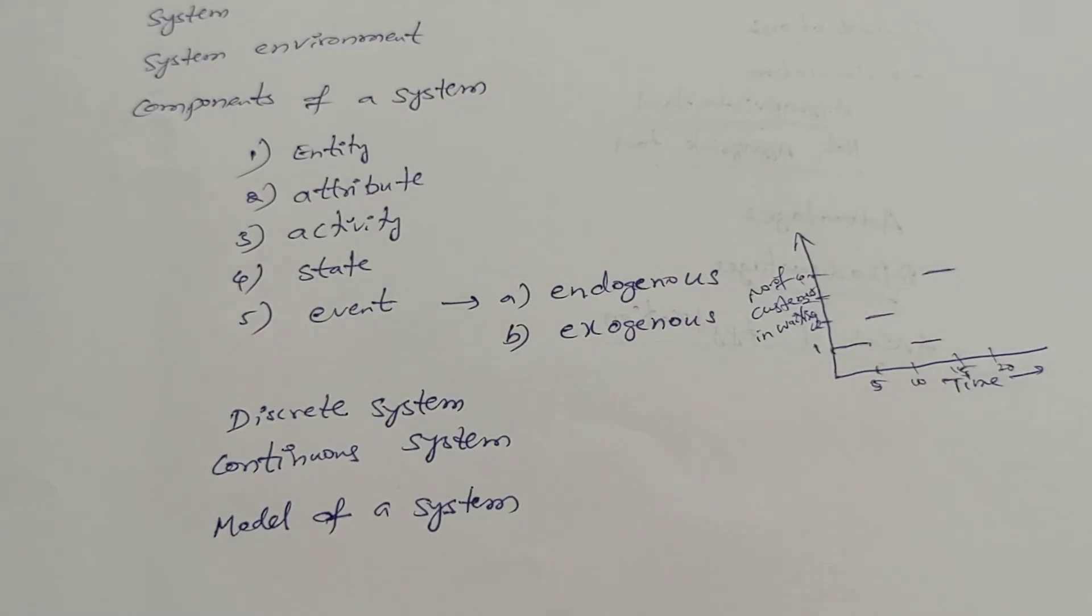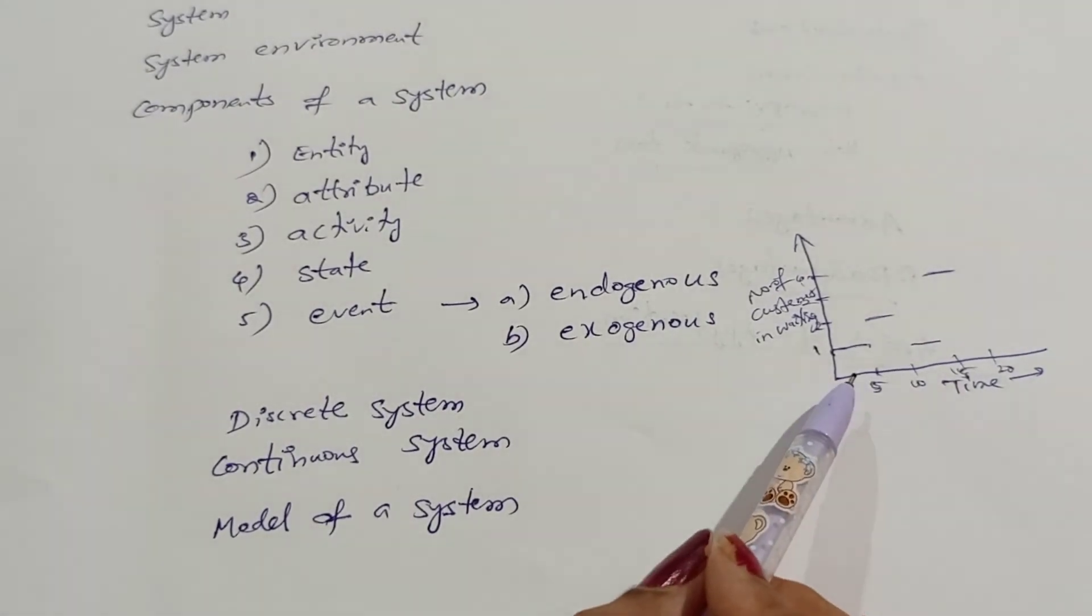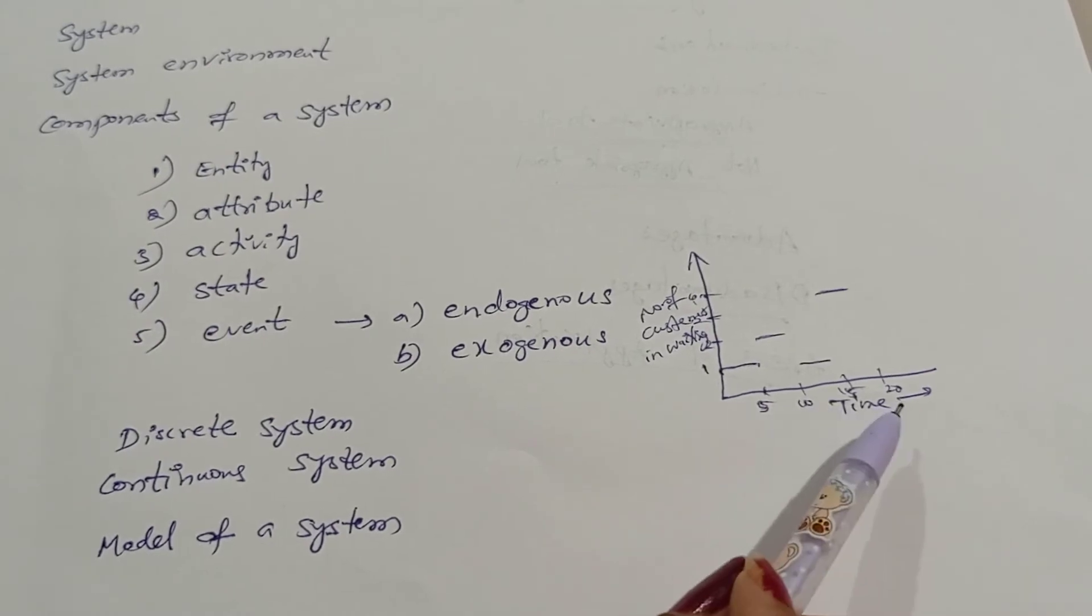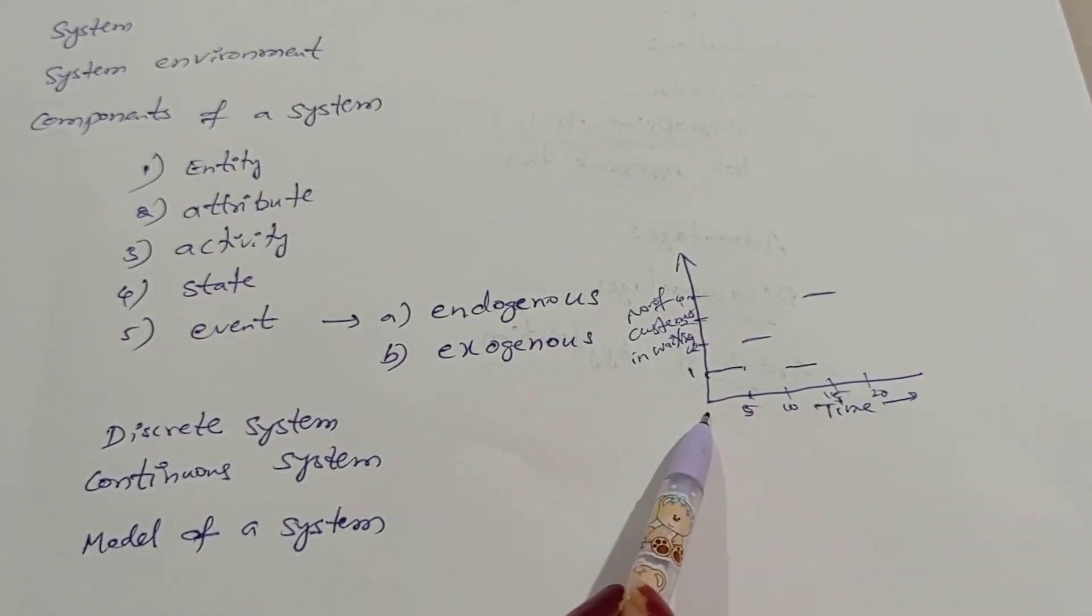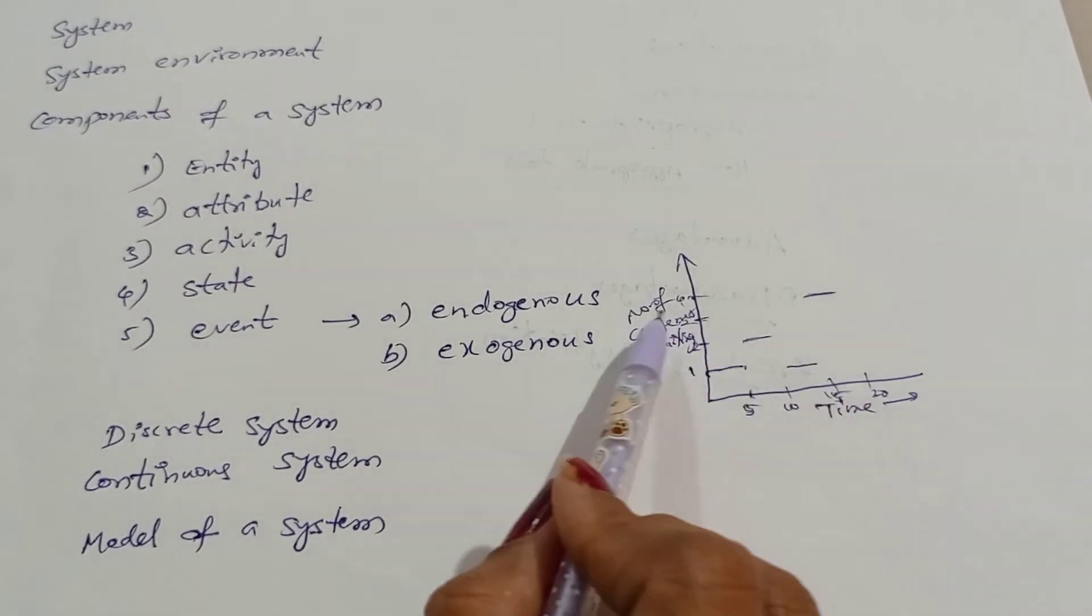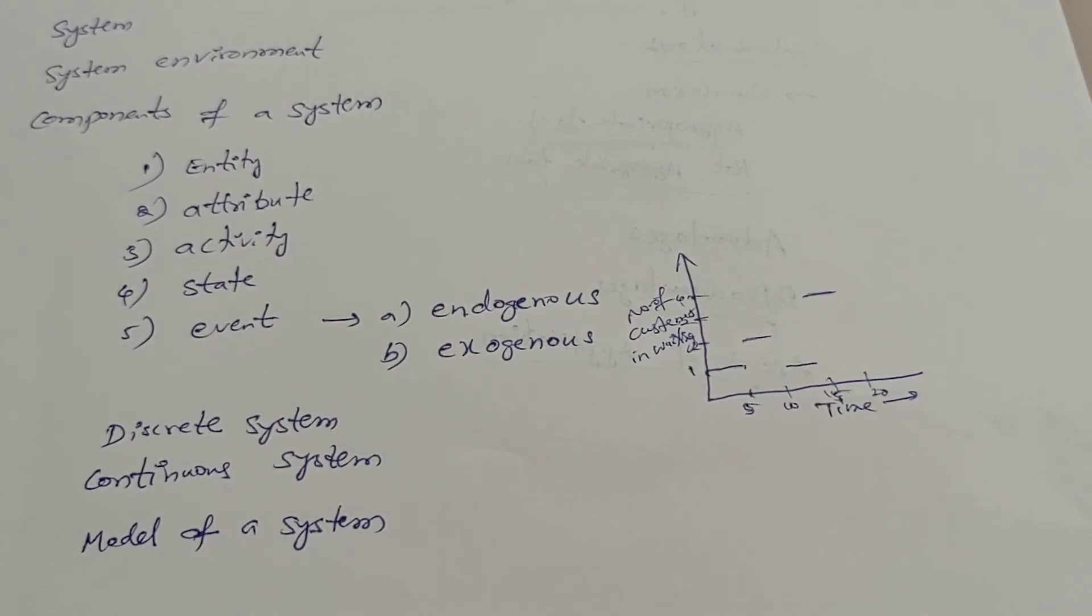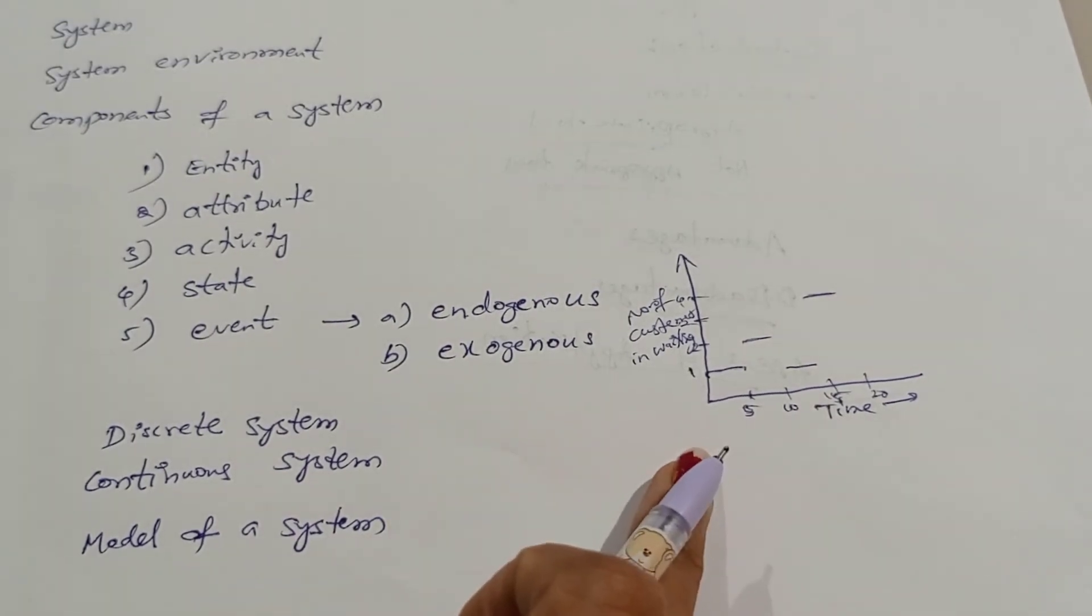It will be changing at specific time points. Here, those time points are 5 minutes, 10 minutes, and so on. First, 0 to 5 minutes, 5 to 10 minutes, and from 15 to 20 minutes, when we observe four customers waiting in line. This is a discrete system.